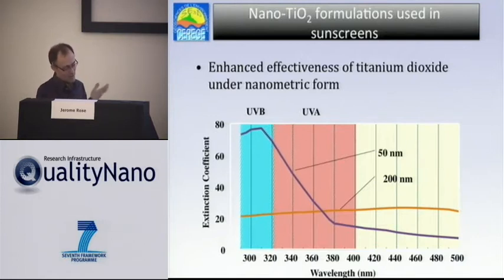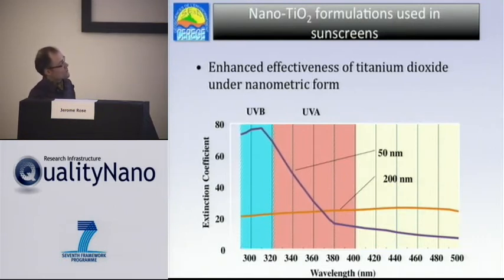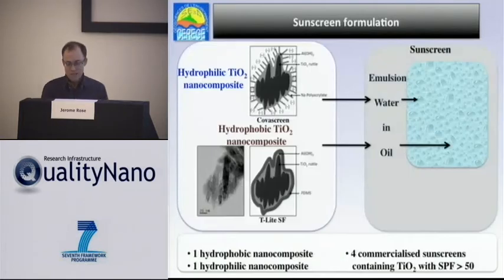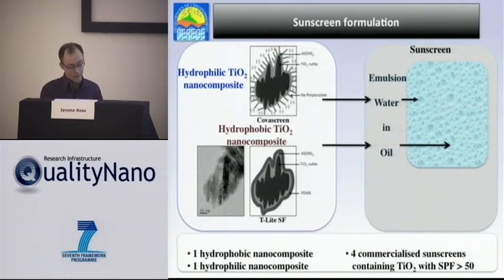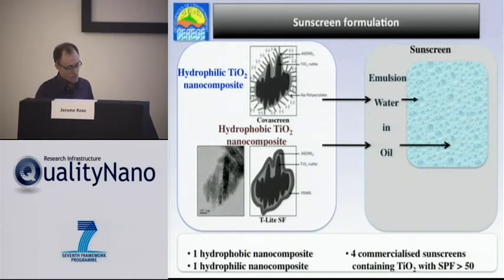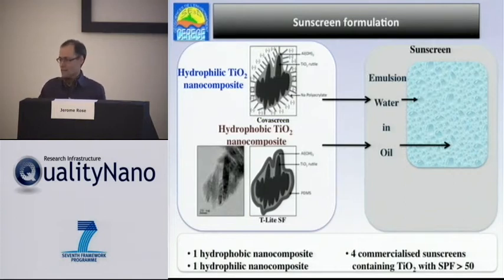Why are titanium nanoparticles used in sunscreen? The first argument is that when it's nano, it's not white — so you have invisible cream, which was a commercial argument. But there is a much more interesting argument: the efficiency as UV absorber. The absorbent capacity of 50 nm particles is much better in the UV energy range, which is the better argument. There are two strategies for cosmetics companies: whether they use a hydrophilic composite or a hydrophobic composite. These composites based on titanium dioxide are then incorporated into the emulsion.